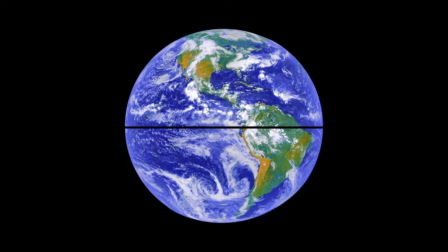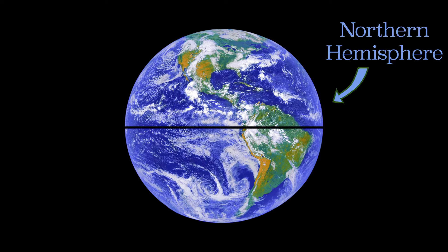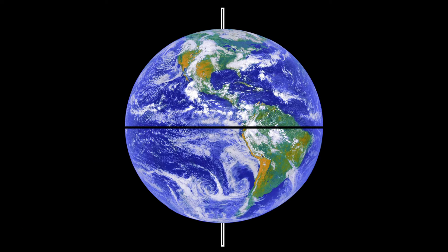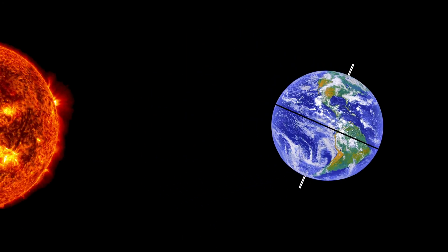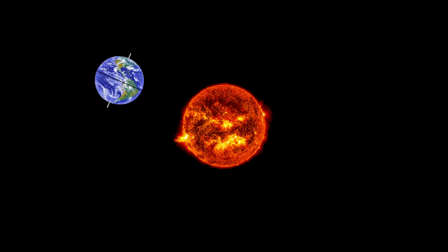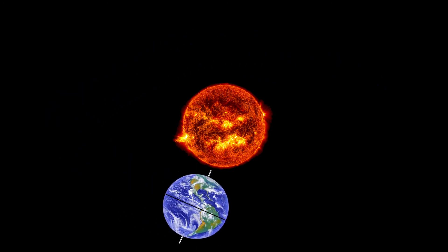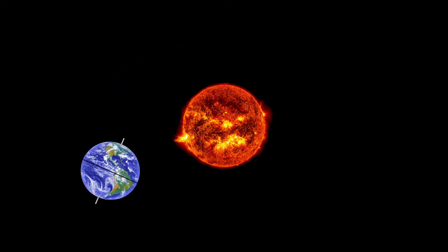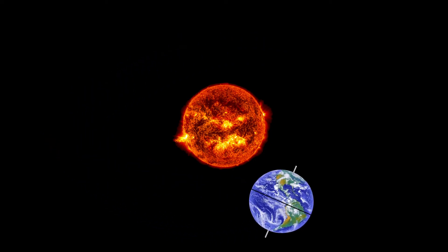Let me show you. Here's the Earth. The equator runs right across the middle and creates the northern and southern hemispheres. Now let's make sure it's tilted. We zoom back and here's the Sun. The Earth orbits the Sun like this. Each trip around the Sun is one year. Notice that the Earth is always tilted in the same direction.